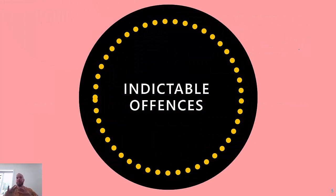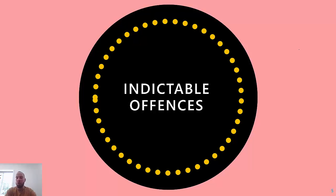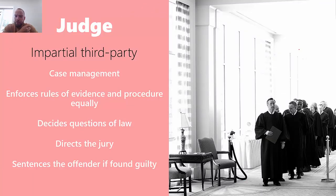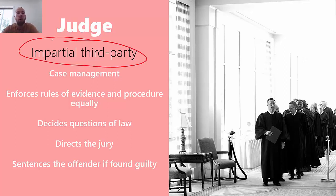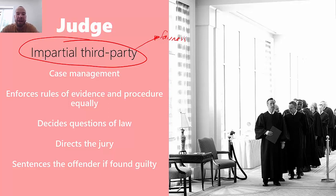We're going to start with indictable offences and split them into indictable and summary, to understand how things change from the County and Supreme Court down to the magistrate's court. The fundamental role of each key personnel is essentially the same regardless of the level of the crime. The judge's central role - the catch-all - is to be the impartial third party, which is heavily linked to fairness.